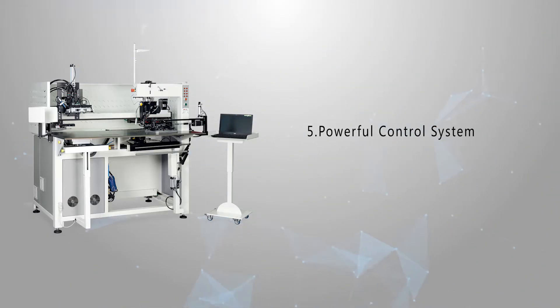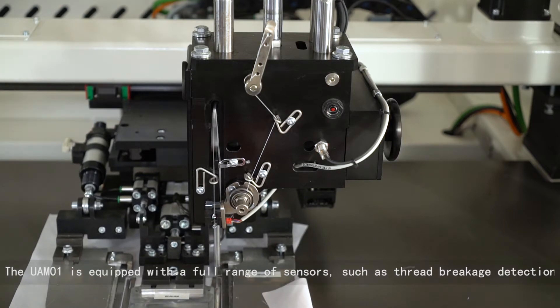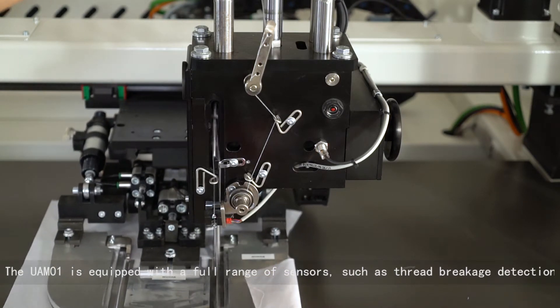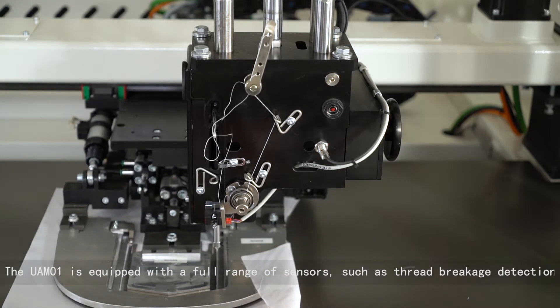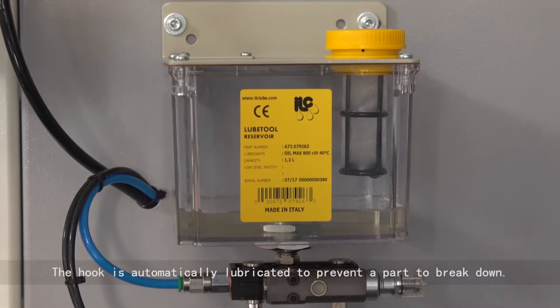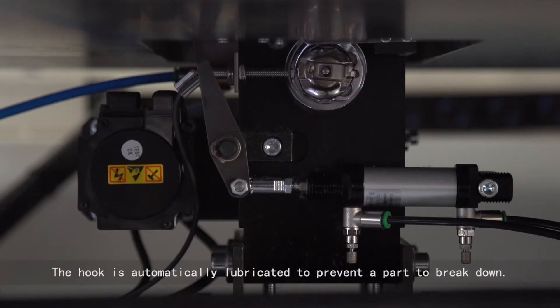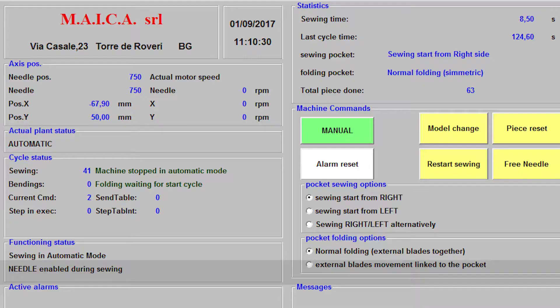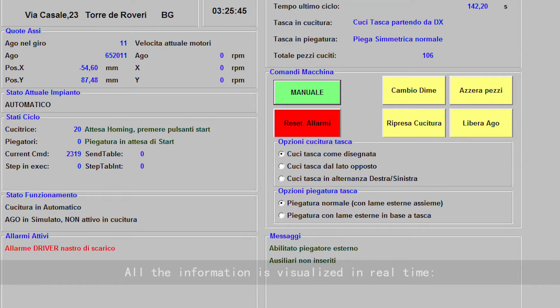Powerful control system. UAM01 is equipped with a full range of sensors such as thread breakage detection. The hook is automatically lubricated to prevent a part from breaking down. All the information is visualized in real time. Automatic alarm display. Automatic failure report.